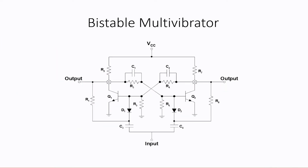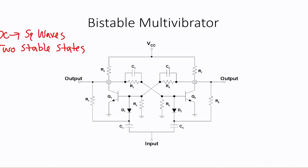The next circuit we're going to look at is the bistable multivibrator. Again, the purpose is to turn DC into square waves. Bistable, like the name suggests, has two stable states. But instead of requiring a positive trigger pulse, it requires a negative input trigger pulse to change states. The first stable state will have Q1 on. If Q1 is on, our output is going to be a low, because we're operating in saturation and our collector resistor is dropping all of the voltage.